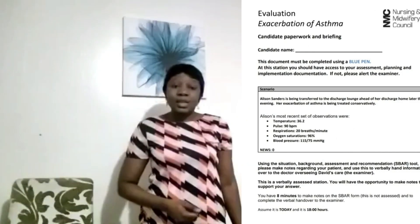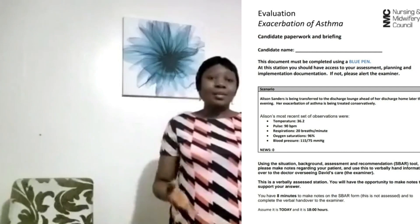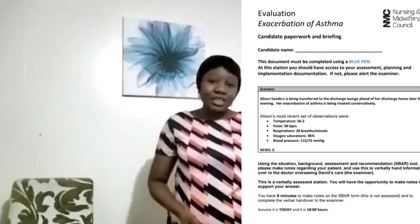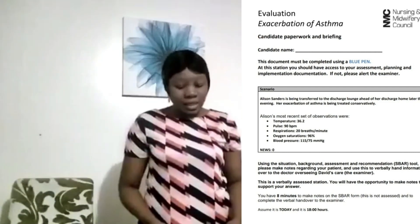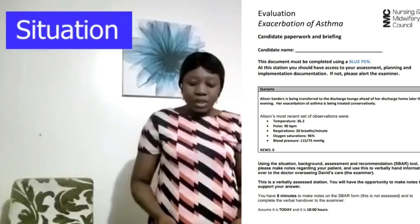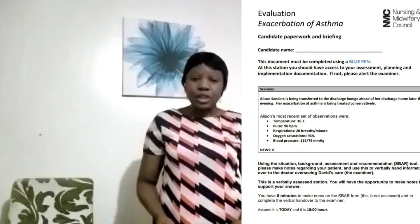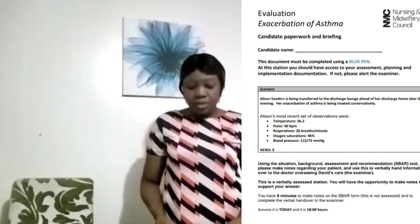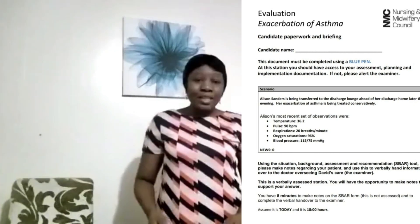Now I'm going to be presenting a patient, Alissa Sanders, who came to the hospital with complaints of chest tightness and breathlessness. I've written this down at the back of my evaluation chart and I'll be reading it out to my assessor. 'Good morning, my name is Funke, one of the nurses from the respiratory unit. I'm here to hand over Alison Sanders, hospital number 123456, date of birth 1st of January 1993, address 15 Cherry Lane. Alison is being transferred to the discharge lounge to be handed over to go home later this evening. Her exacerbation of asthma has been treated conservatively.' That is the Situation.